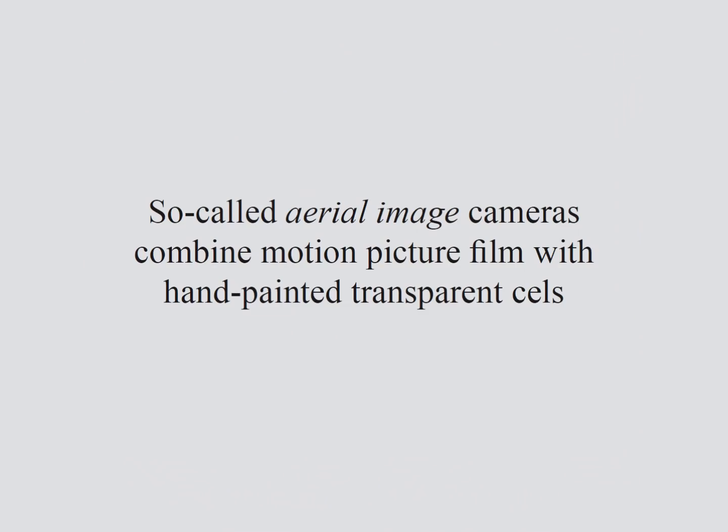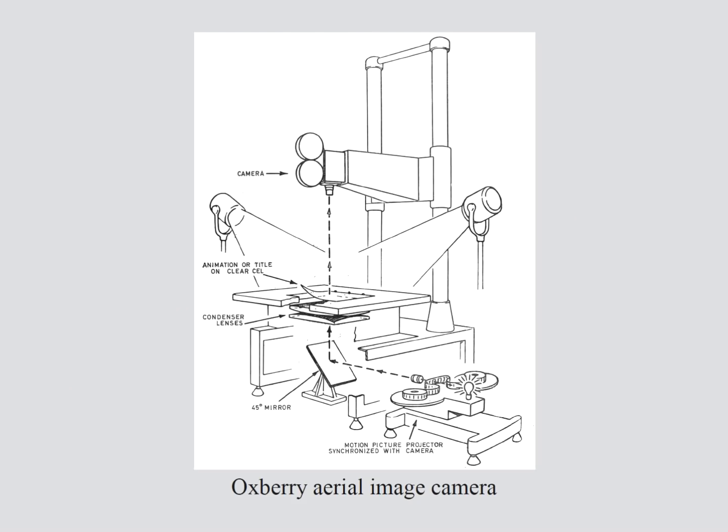A more advanced method for combining live-action and animation is called the aerial image camera, which works with a synchronized projector and camera. As each frame of the pre-shot film is projected onto the animation stand, another camera re-photographs that image. So you can not only rotoscope, but also combine live-action with drawn animation.